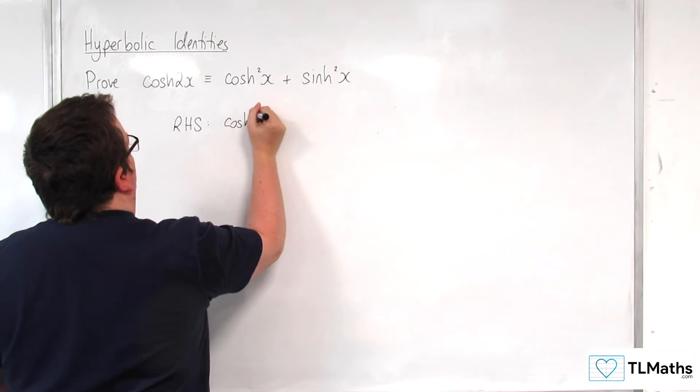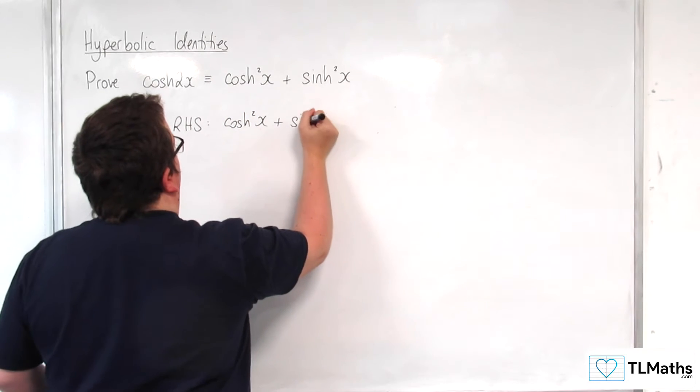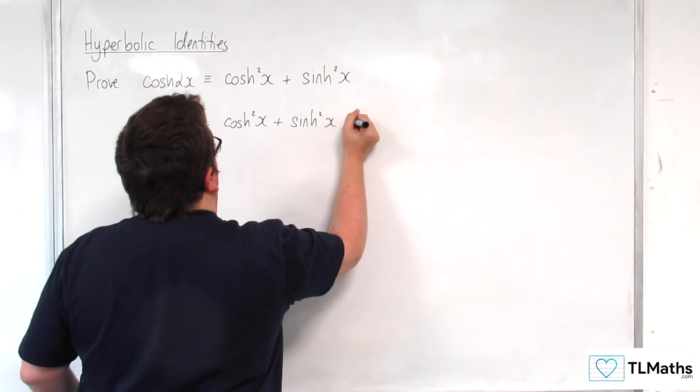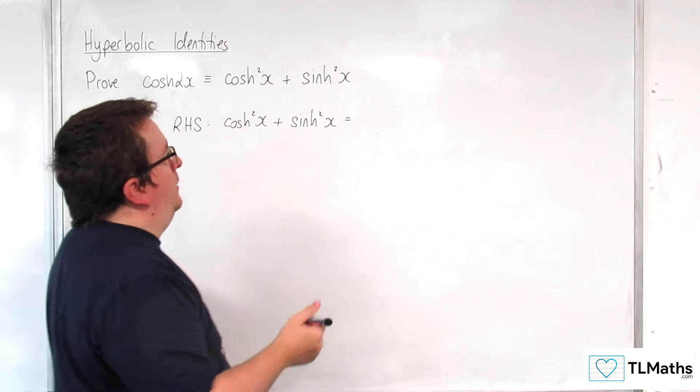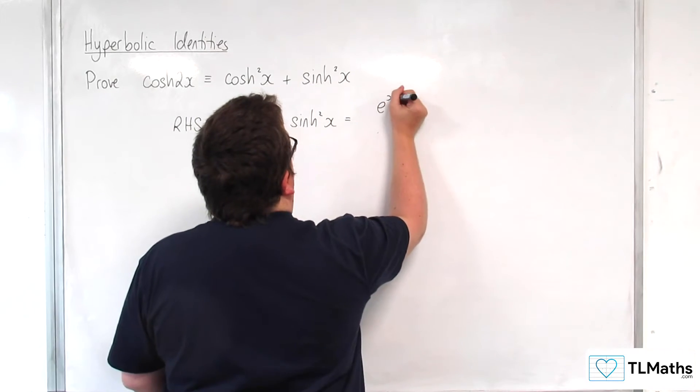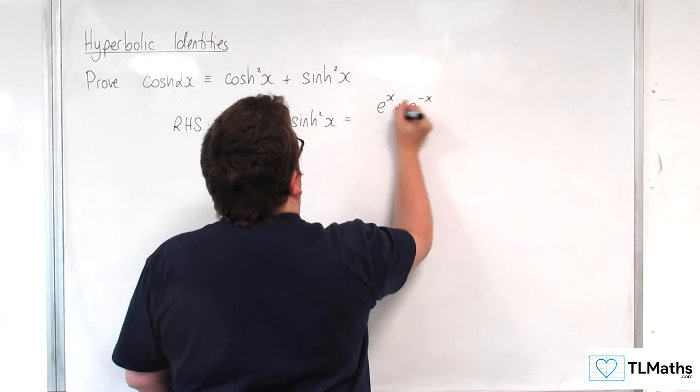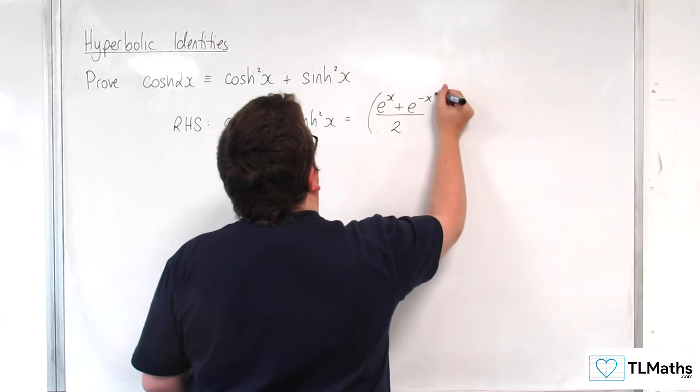We have cosh squared x plus sinh squared x. So cosh of x is e to the x plus e to the minus x over 2, and we are squaring that.